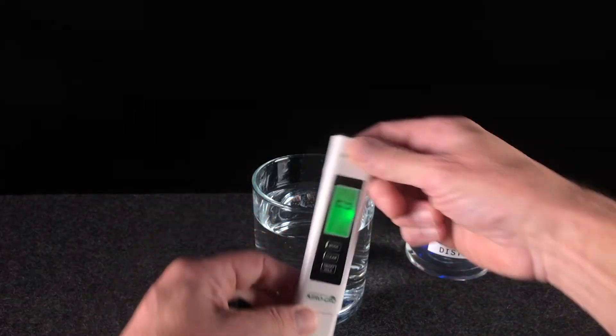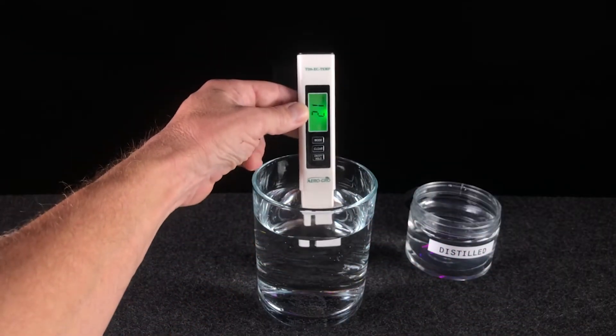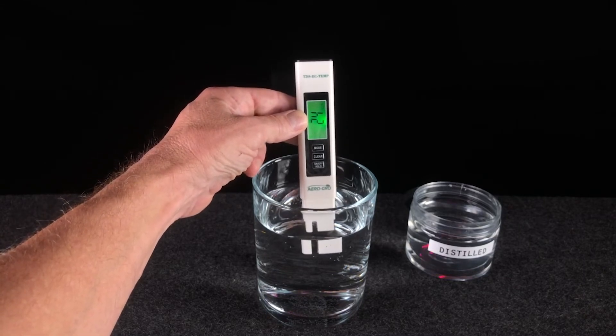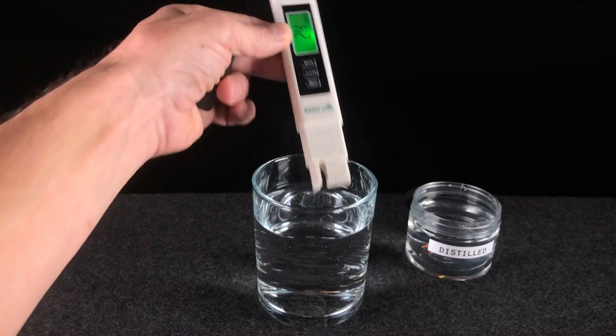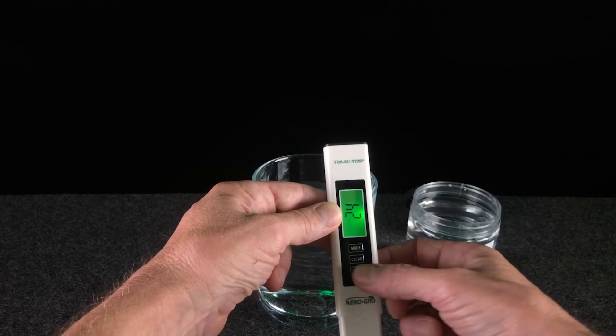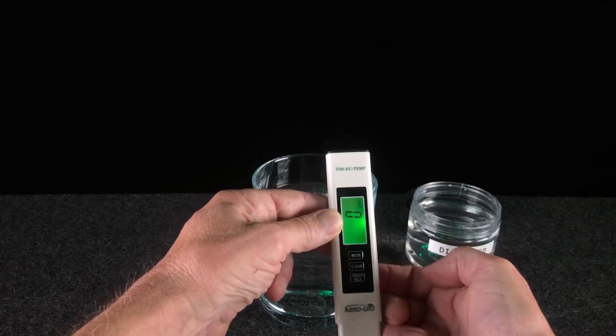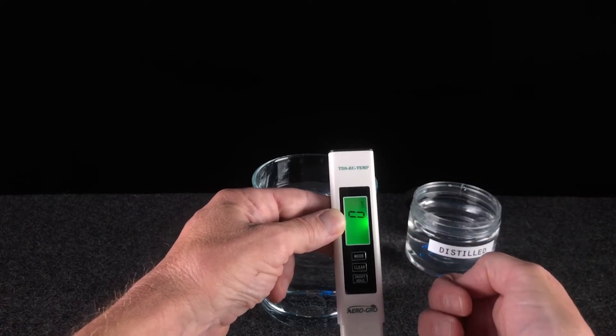So now when we want to take a reading, we'll simply dip it into the solution as usual, wait for four or five seconds. There you go. 24 parts per million is what this water measures. Now to clear that display, that's where we use the clear button. Clear. And it has now been recalibrated back to zero parts per million.